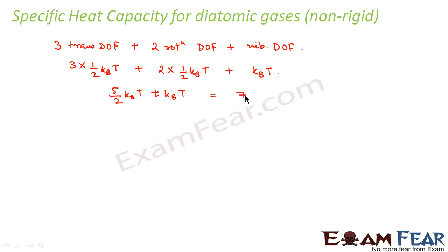So this would be the total internal energy of 1 mole of gas. This can be written as 7 by 2 RT. So 7 by 2 RT would be the internal energy for 1 mole.